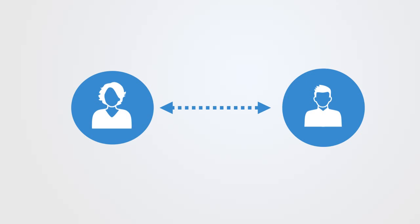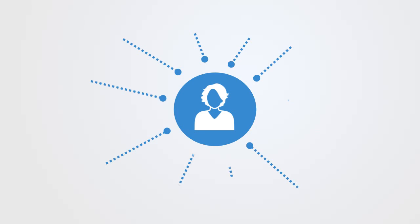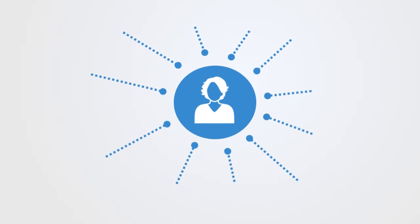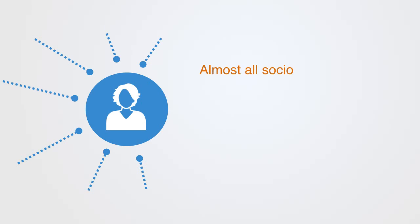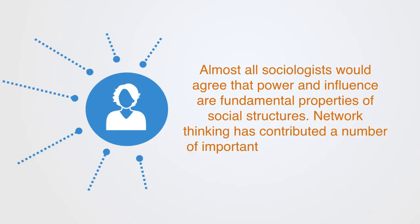A primary question we're often interested in when looking at individual agents within a network is not so much to do with their properties in isolation, but instead asking how influential they are within that network based upon their connections. This measurement of how influential or powerful an agent is within a given network is called centrality.